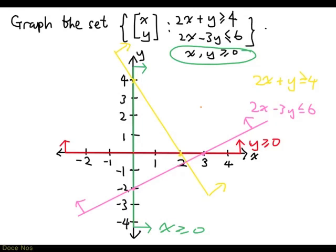Now combining what we have drawn, the set of points satisfying all four inequalities is going to be given by this blue shaded region. And that's our answer.